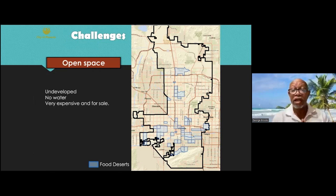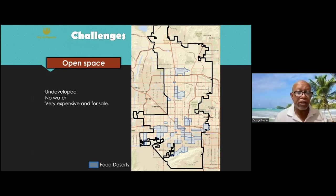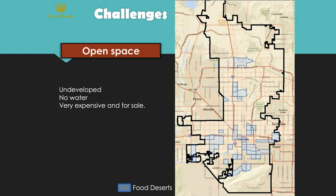Phoenix has a lot of open space — we're 510 square miles, and roughly 40% of that is empty. You'd think that would be great for urban agriculture, but a lot of it is undeveloped. We're a desert city. There's no infrastructure, so there's no water going to a lot of these parcels. The parts that are developed are very expensive, and if you wanted to build a farm on one, it could get sold out from underneath you, or the banks won't finance it because it doesn't meet the highest and best use rules.